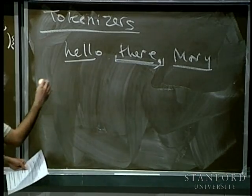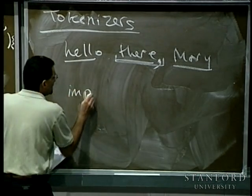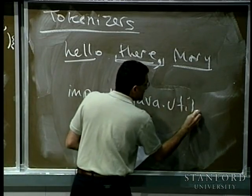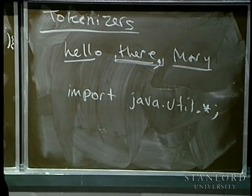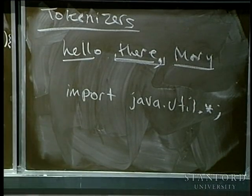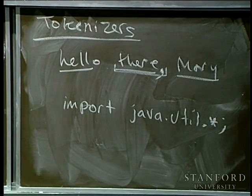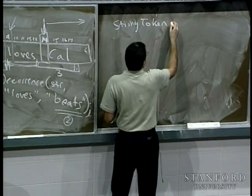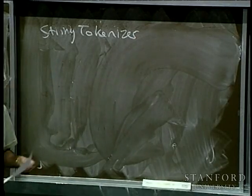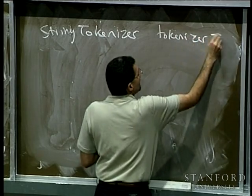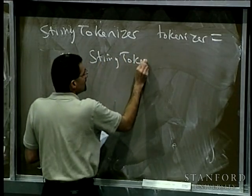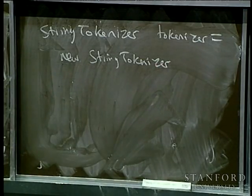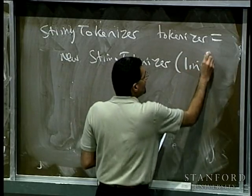If we want to tokenize, there is a library in Java with fun stuff for tokenization — that's java.util. So we import java.util.*. What we get is something called a StringTokenizer — a class we can use to tokenize text. To create one: StringTokenizer tokenizer = new StringTokenizer(line), where line is the string you're going to tokenize.